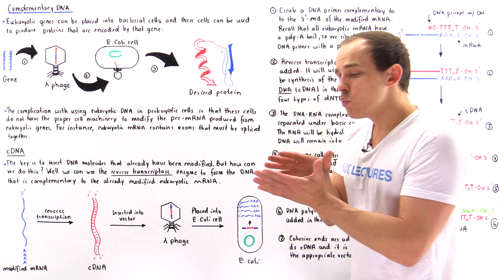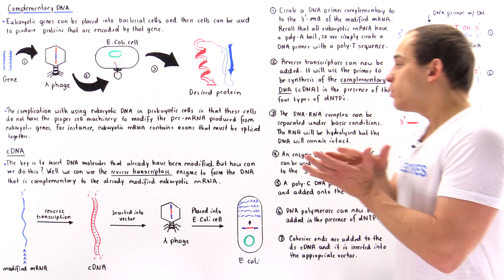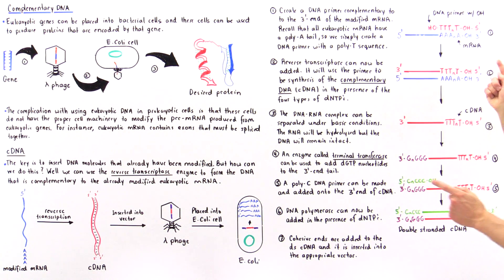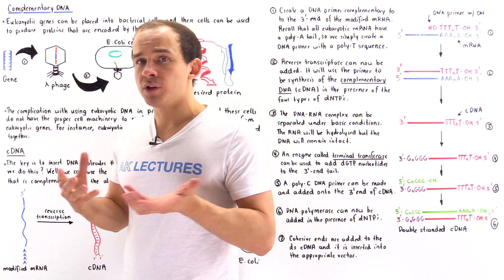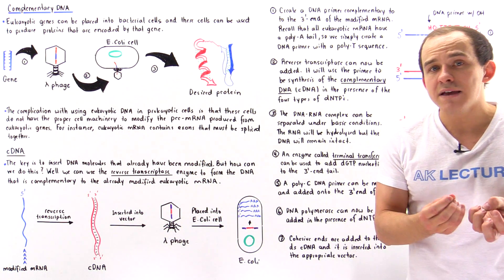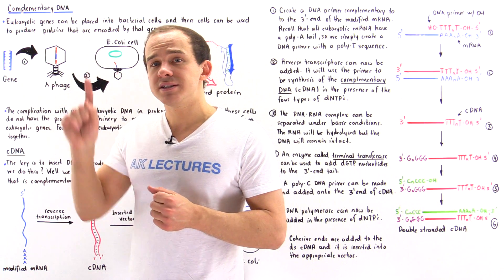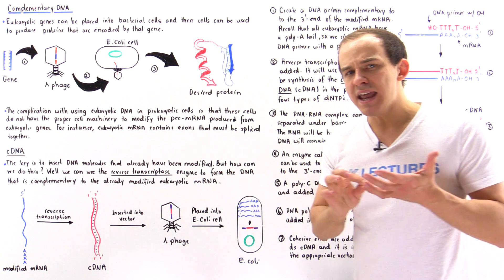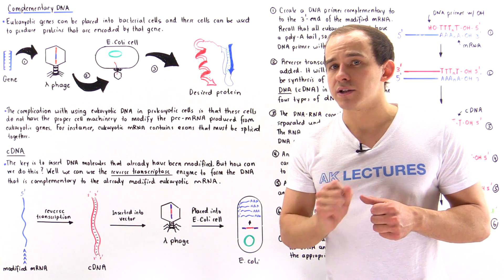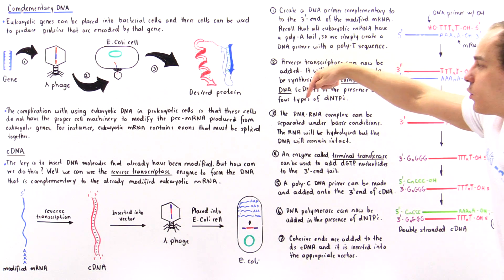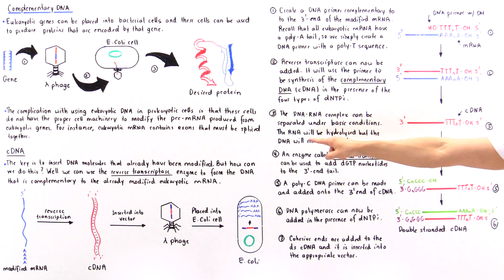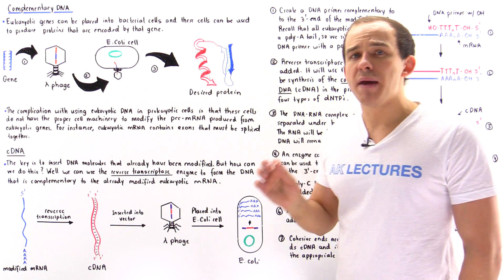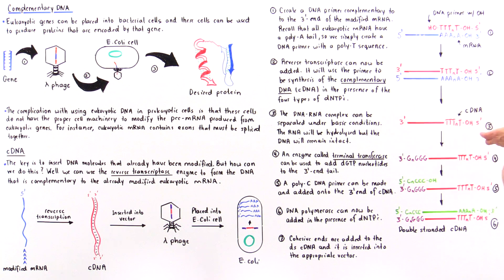In step 3, we want to dissociate and break apart these two molecules, because ultimately we only want the red DNA molecule, not the blue RNA molecule. DNA molecules are more stable than RNA molecules — if we increase the pH, making our solution very basic, DNA molecules will remain intact but RNA molecules will be hydrolyzed and destroyed. So we take the DNA-RNA complex, increase the pH to create a basic solution, the RNA is hydrolyzed while the DNA remains intact, and after step 3 we isolate that individual strand of complementary DNA.